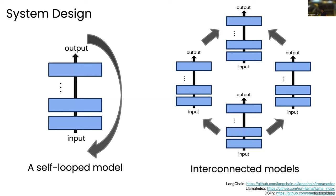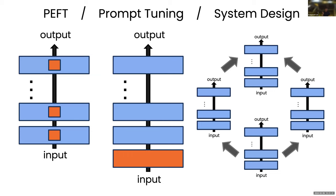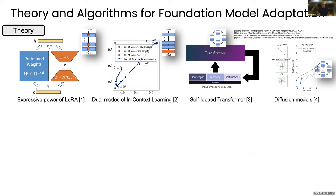So these are three completely new ways of adapting foundation models to downstream tasks: one — parameter-efficient fine-tuning, where you tune each parameter little by little; two — prompt tuning, where you fix the entire network and only change the way input is processed; and three — system design using foundation models as components. My lab has been working on both theory and algorithms in this domain.